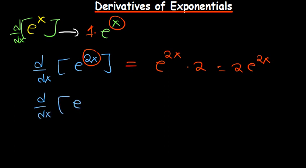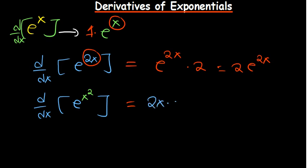Now for e to the power x squared — feel free to pause the video and try it out. Ask yourself: what's the derivative of the power? The power is x squared, so the derivative is 2x. The answer becomes 2x multiplied by the original part, e to the power x squared.